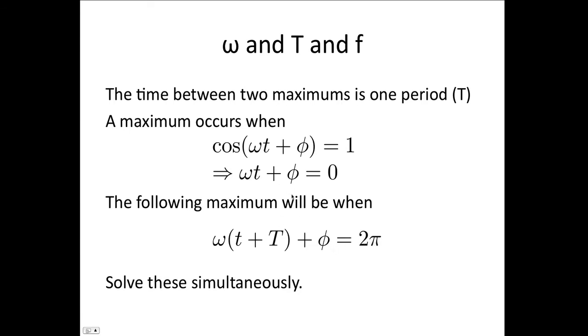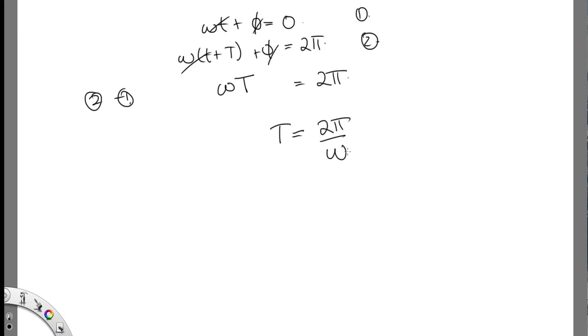So we've got ωt + φ equals 0, and ω(t + T) + φ equals 2π. Let's call this one equation 1, this one equation 2. Let's do 2 minus 1. The ωt's cancel out, and we end up with ω times T. The φ's cancel each other out, and we end up with 2π. So we can see that T equals 2π over ω. That's our relationship between the period and ω.